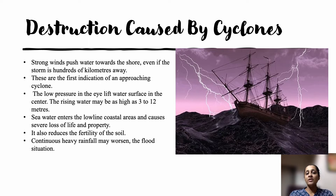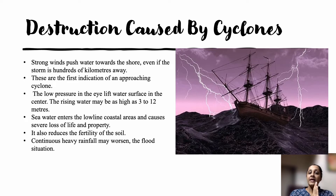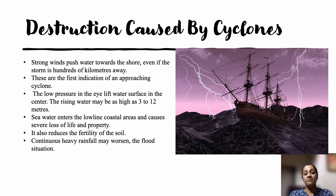There is always a first indication of an approaching cyclone: the low pressure in the eye will lift the water surface in the center. A cyclone has an eye in between which has no cloud or wind, but the surrounding area has very high wind speed. Once the eye is near, the rising water can be 3 to 12 meters high — which is very significant. This seawater then enters low-lying coastal areas and causes flooding.